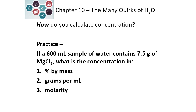Here's a practice problem. See if you can calculate percent by mass, grams per milliliter, and molarity. Pause the video, try your calculations, and when you're ready, start the video again. We have 600 milliliters of water, which, because the density of water is 1 gram per milliliter, equals 600 grams of water.